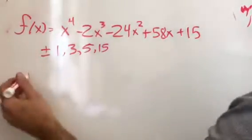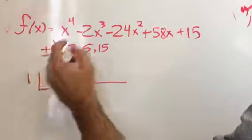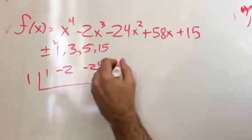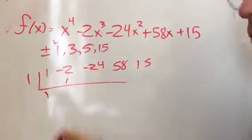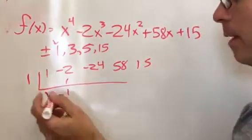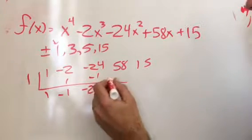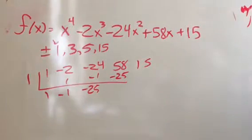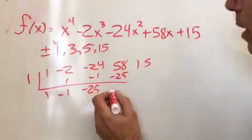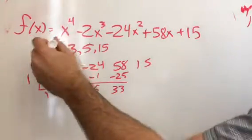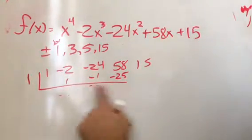I have 1x fourth, negative 2x cubed, negative 24x squared, 58x's and 15 1's. So bring it down, multiply, add, multiply, add, multiply. I don't know, negative, no, 33. That's not going to work out. So 1 doesn't work. Positive 1 doesn't work at least.